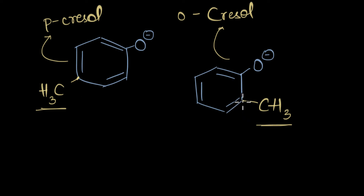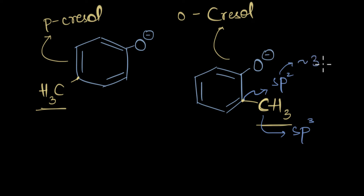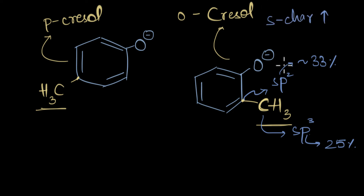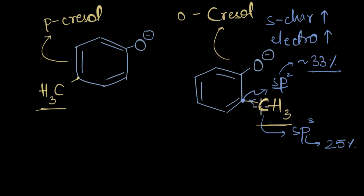Let's find out the electronegativity difference between the ring carbon and the methyl carbon. The ring carbon is sp2 hybridized with about 33% s-character, while the methyl carbon is sp3 hybridized with about 25% s-character. As s-character increases, electronegativity increases. So the sp2 carbon is more electronegative and pulls electrons from the alkyl group. Alkyl groups are generally electron-donating — we call them EDG, electron-donating groups.